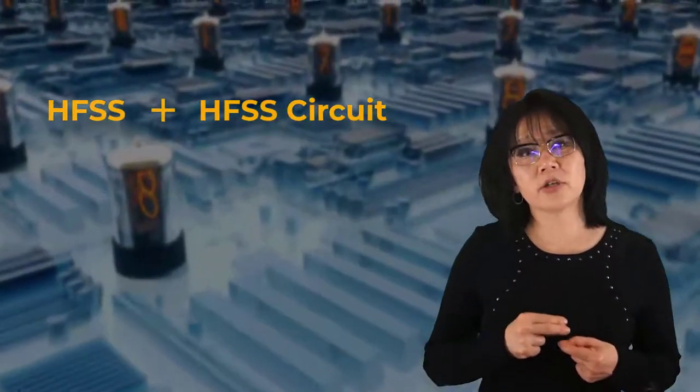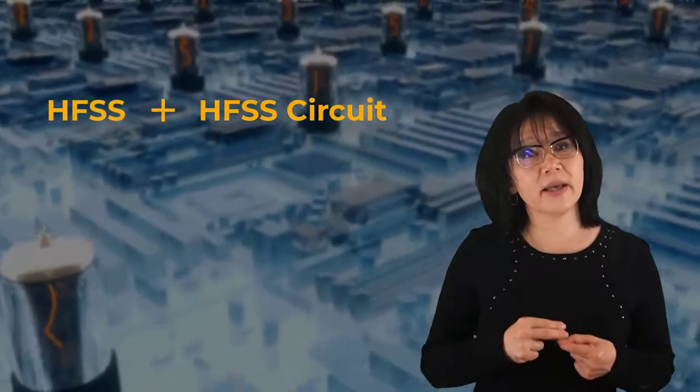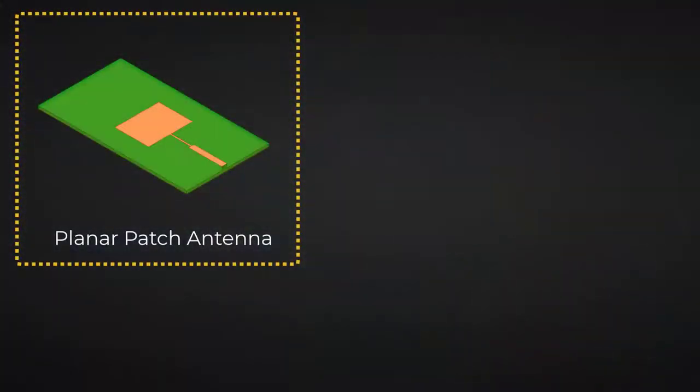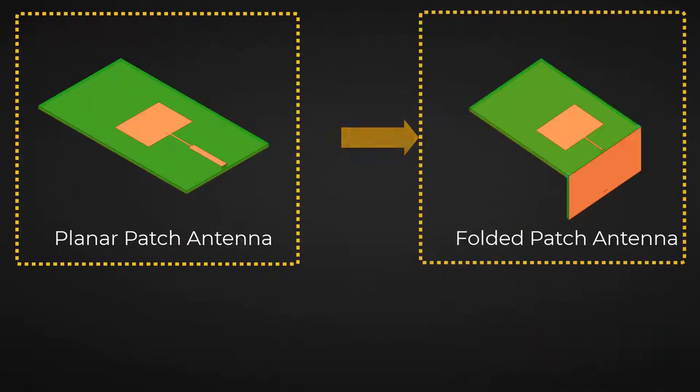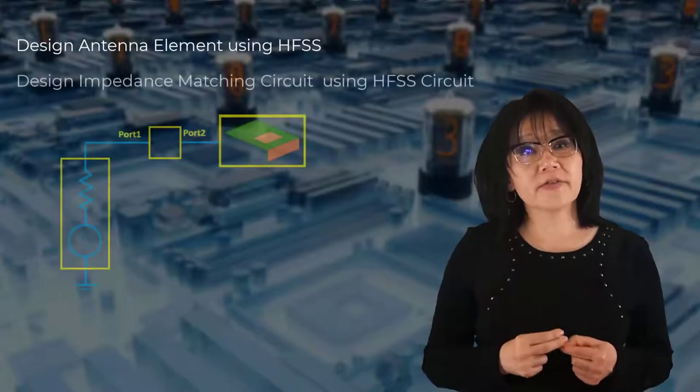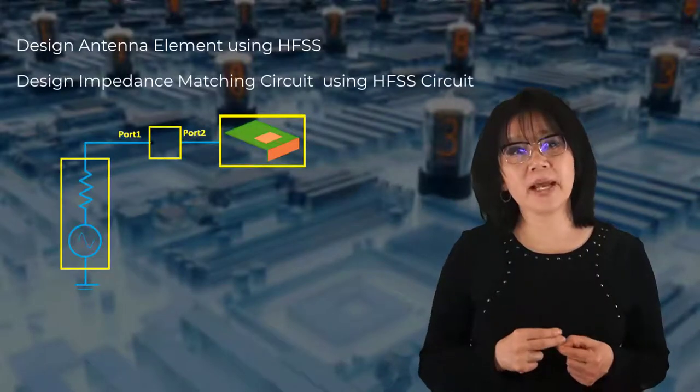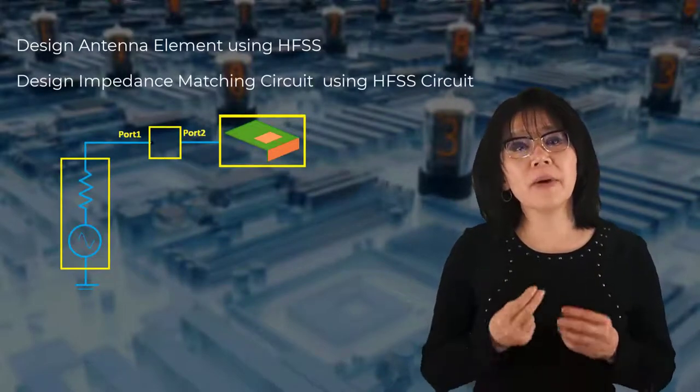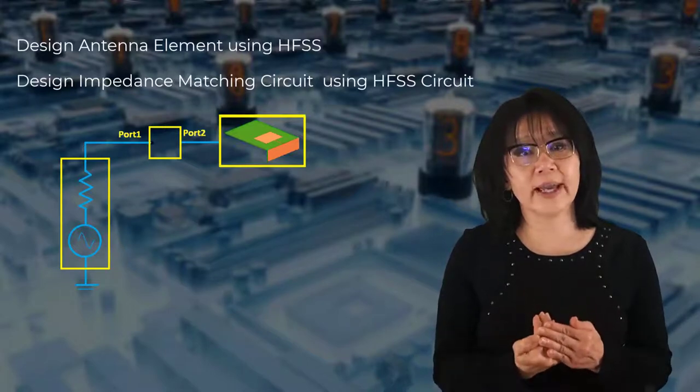In this module, we'll use HFSS as the EM simulation tool and HFSS circuit to match and tune that antenna element. We can use a simple planar patch antenna and bend it and fold it 90 degrees. Using HFSS electromagnetic simulation to design the antenna element, and using HFSS circuit to design a matching circuit to include the modification of that physical layout, that bending.